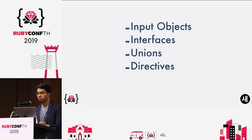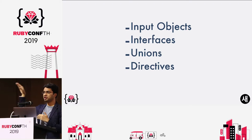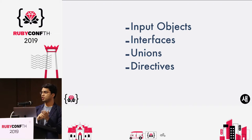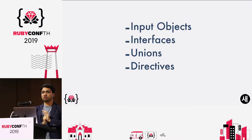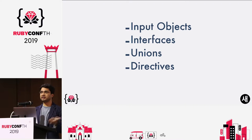There are also input objects, interfaces, and unions. Input objects are like your action controller parameters — providing types for that. Interfaces allow you to provide concrete implementations for types. Unions can be thought of like polymorphic associations — you can use polymorphic types in your GraphQL queries. Directives allow excluding or including more information from the client side on your applications.